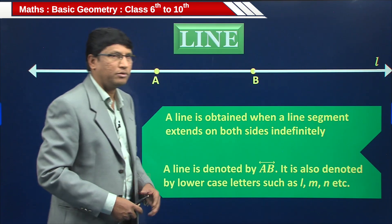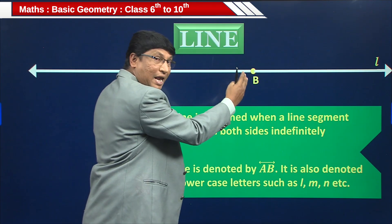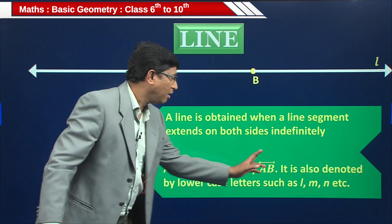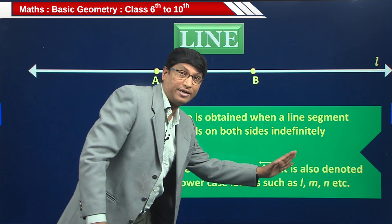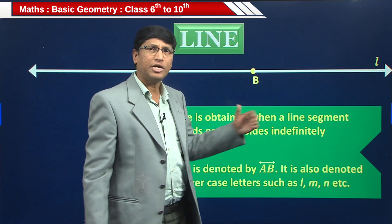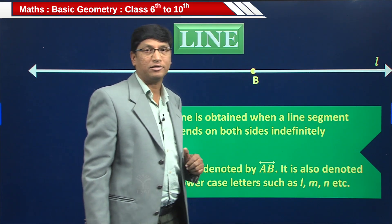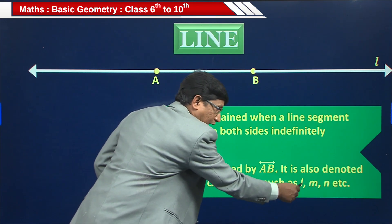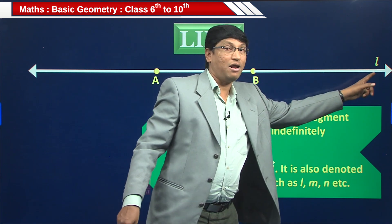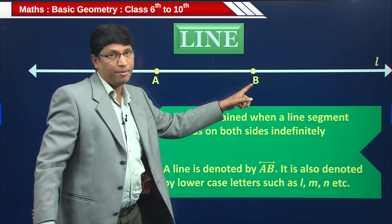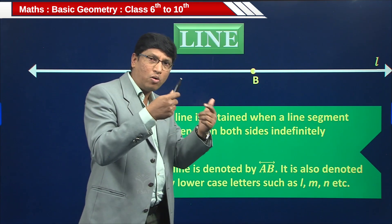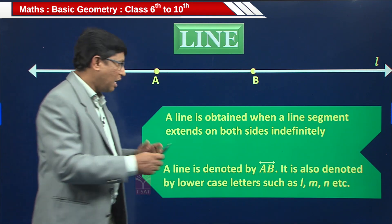A line is obtained when a line segment is extended on both sides indefinitely — you cannot measure its length. A line is denoted as line AB with a double-headed arrow above AB, meaning the arrow points in both directions. Lines can also be represented by small letters such as l, m, or n — so you can write it as line l or line AB with the double-headed arrow.